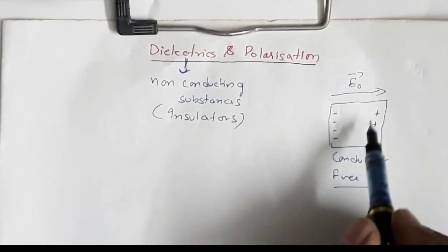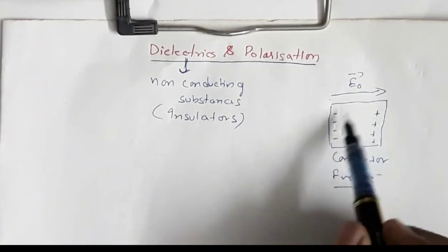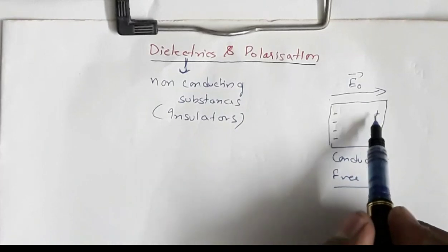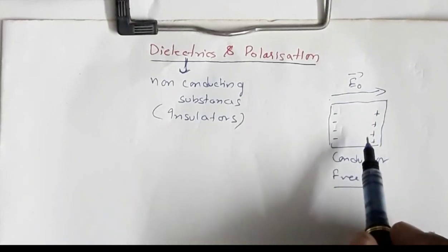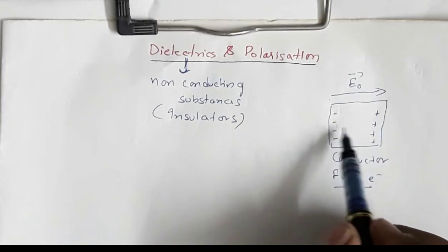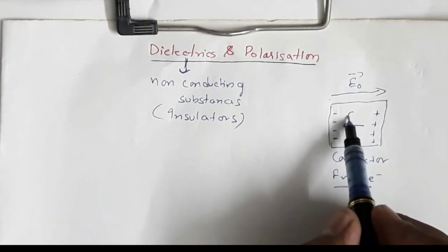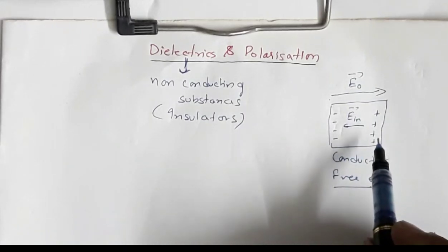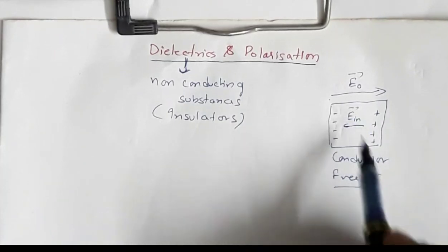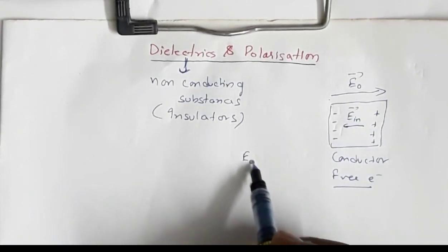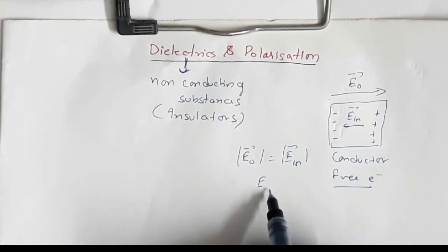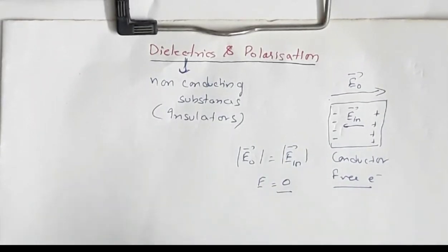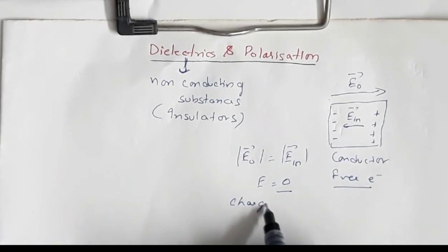These are induced charges — remember, the total charge is still zero; there is no generation of charge. The induced charges create an induced electric field, directed from positive to negative charge, which is opposite to the external field. The magnitude of the induced electric field equals the external field, so the resultant electric field inside the conductor is zero. This happens because of charge redistribution.